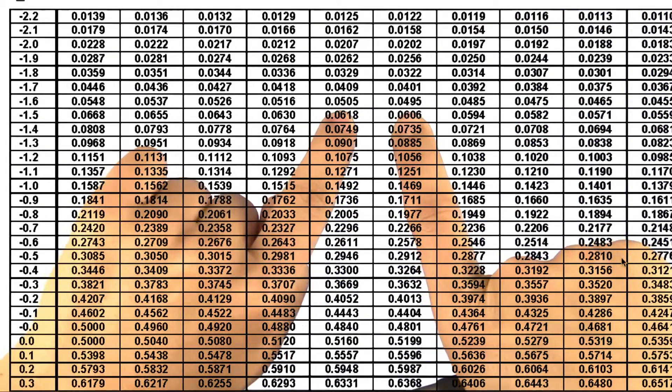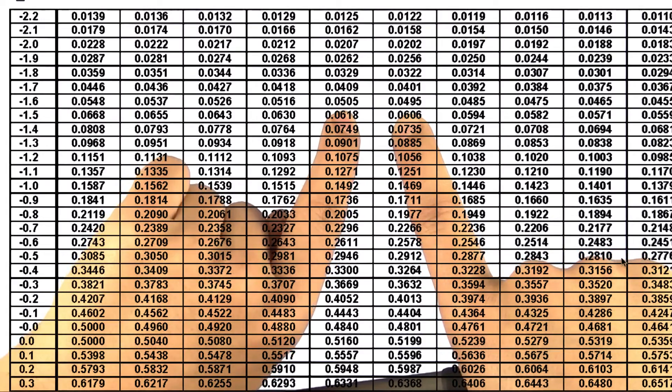Since 0.05 is right in the middle of them, then let's use the z-score that's right in the middle of those. So negative 1.645.